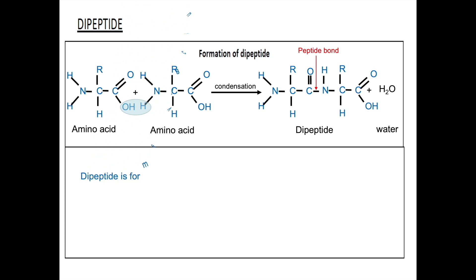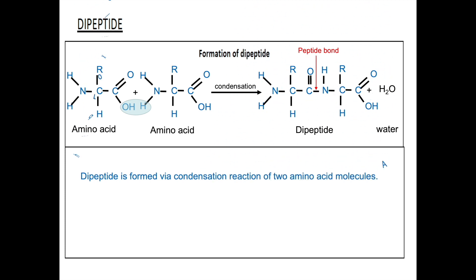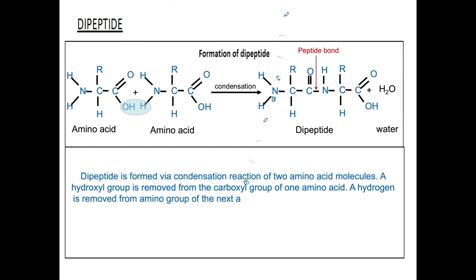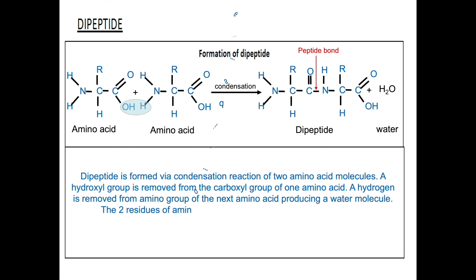To describe the formation of dipeptide, we say dipeptide is formed via condensation reaction of two amino acid molecules. A hydroxyl group is removed from the carboxyl group of one amino acid, and a hydrogen is removed from the amino group of the next amino acid, producing a water molecule. The two residues of amino acids are joined together by a peptide bond.